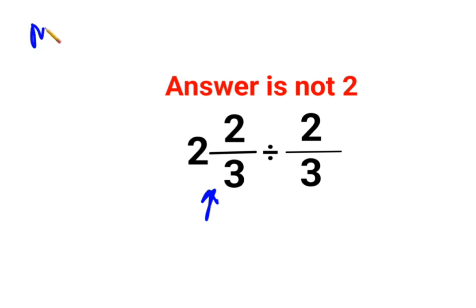So first, whenever you have a mixed fraction in any operation, you need to convert it to its improper form. Okay? So now what is an improper fraction? In this case, it means the numerator is always greater than the denominator.